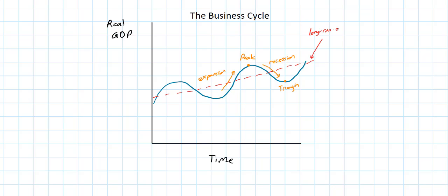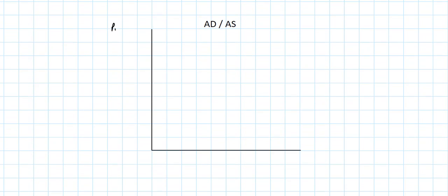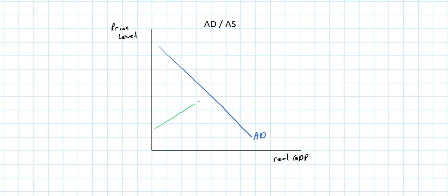Next, we're going to move on to the aggregate demand and aggregate supply model. The vertical axis in the ADAS graph is the price level, representing the consumer price index or another measure of average prices in a country. The horizontal label is real GDP — how much output an entire country produces. The downward-sloping AD curve shows the inverse relationship between the price level and how much of a country's output consumers demand. The SRAS curve represents the short-run increase in output as price levels increase. LRAS, or long-run aggregate supply, represents the potential full employment level of output, so we use YFE for full employment income and PFE for the full employment price level.